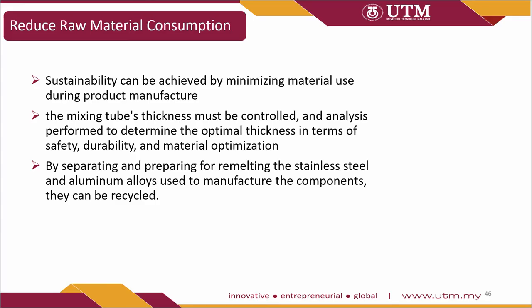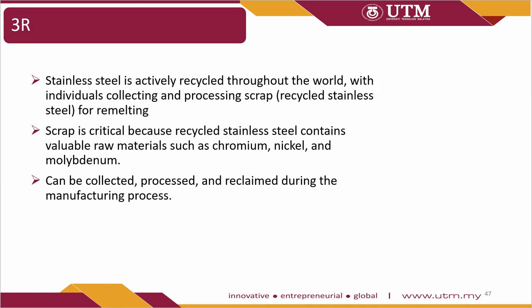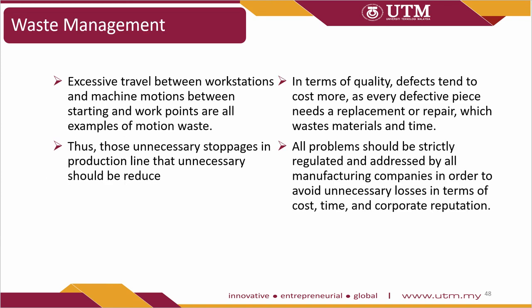For green manufacturing, sustainability can be achieved by minimizing material use during product manufacturing. Maximum thickness must be controlled and analysis performed to determine optimal thickness in terms of safety, durability, and material optimization. The stainless steel and aluminum alloys used can be recycled by applying the 3R concept. Stainless steel is actively recycled worldwide, and scrap contains valuable raw materials such as chromium, nickel, and molybdenum. For waste management, excessive travel between workstations and unnecessary machine motions are examples of waste motion that should be reduced. All problems should be strictly regulated and addressed by manufacturing companies to avoid unnecessary loss in terms of cost, time, and corporate reputation.